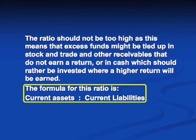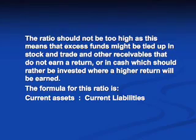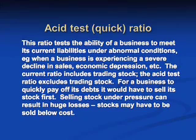The formula for the current ratio is current assets to current liabilities. The three components of current assets are trading inventory, receivables, and cash and cash equivalents. Current liabilities are payables and short-term loans. Next is the acid test or quick ratio.